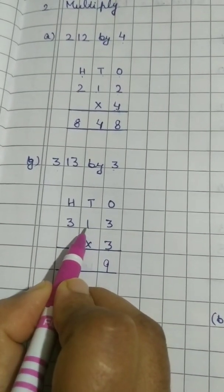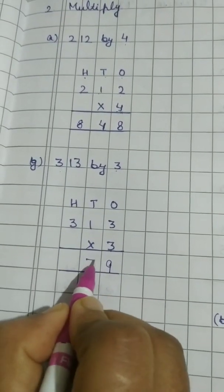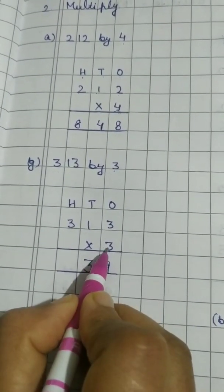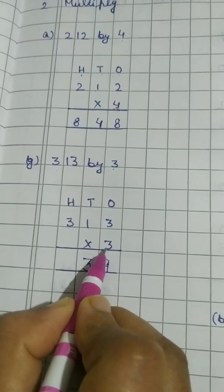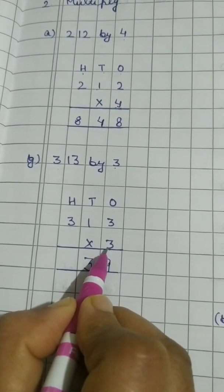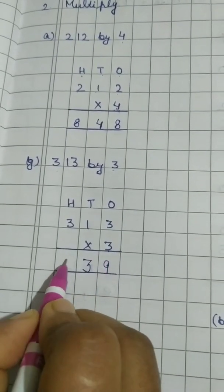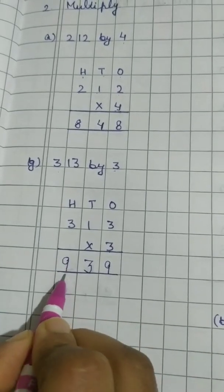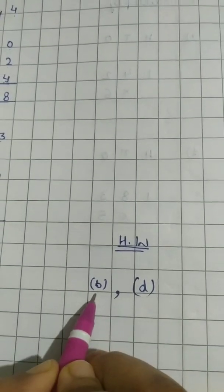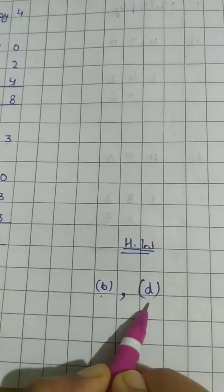Now the turn of digit at 10's place. 3 1's are 3. Now digit at 100's place. 3 1's are 3. 3 3's are 9. So answer is 939. For this question you have to do B part and D part. Thank you children.